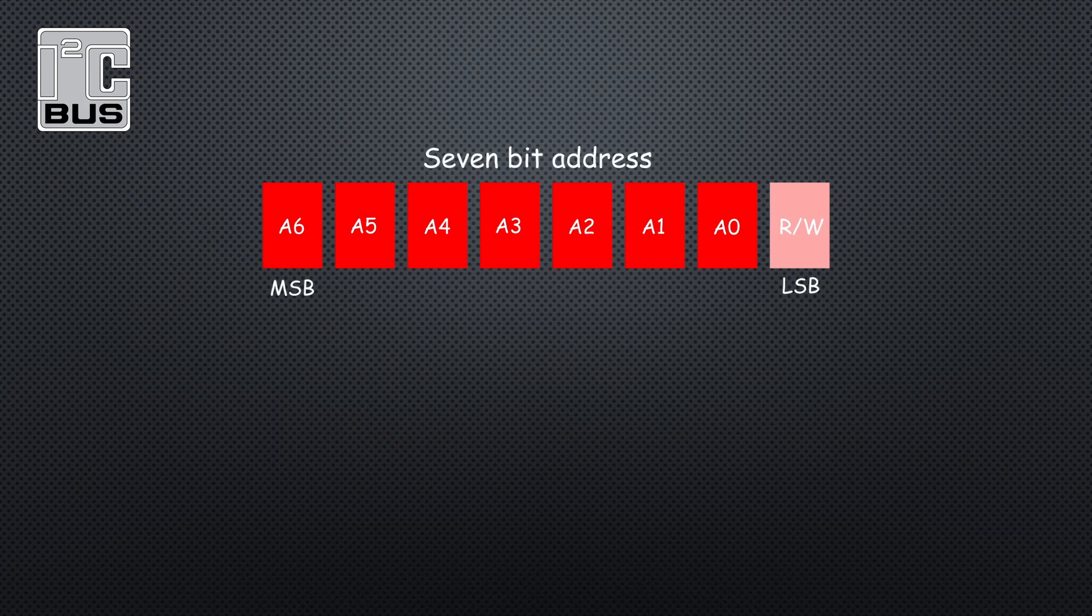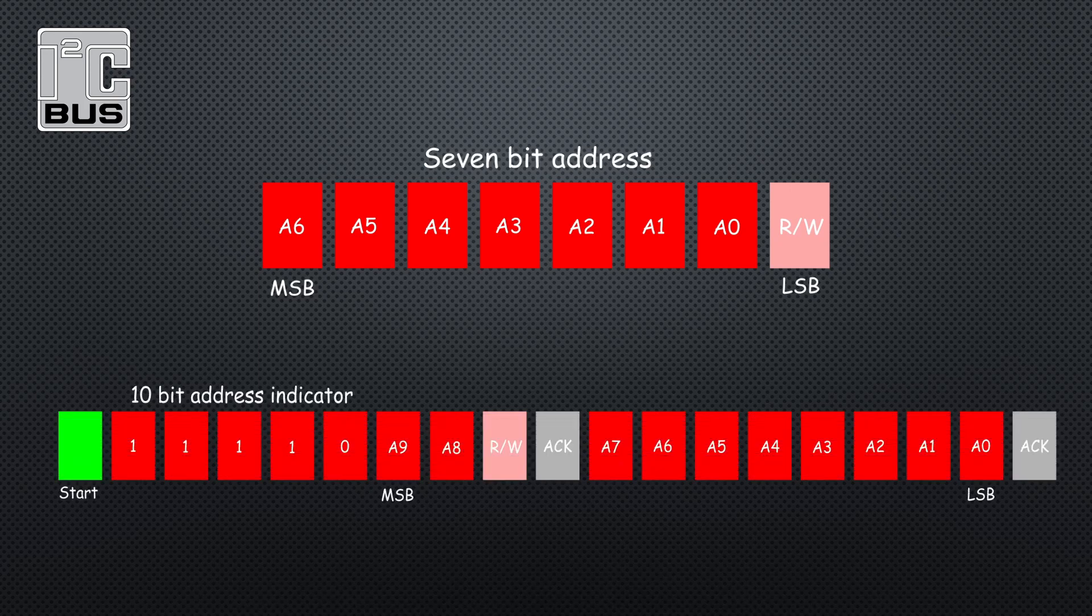In standard 7-bit addressing, the slave address is clocked out most significant bit first, and then on down to the least significant bit, followed by a read/write bit which specifies whether the master is sending data (line low) or requesting data (line high).